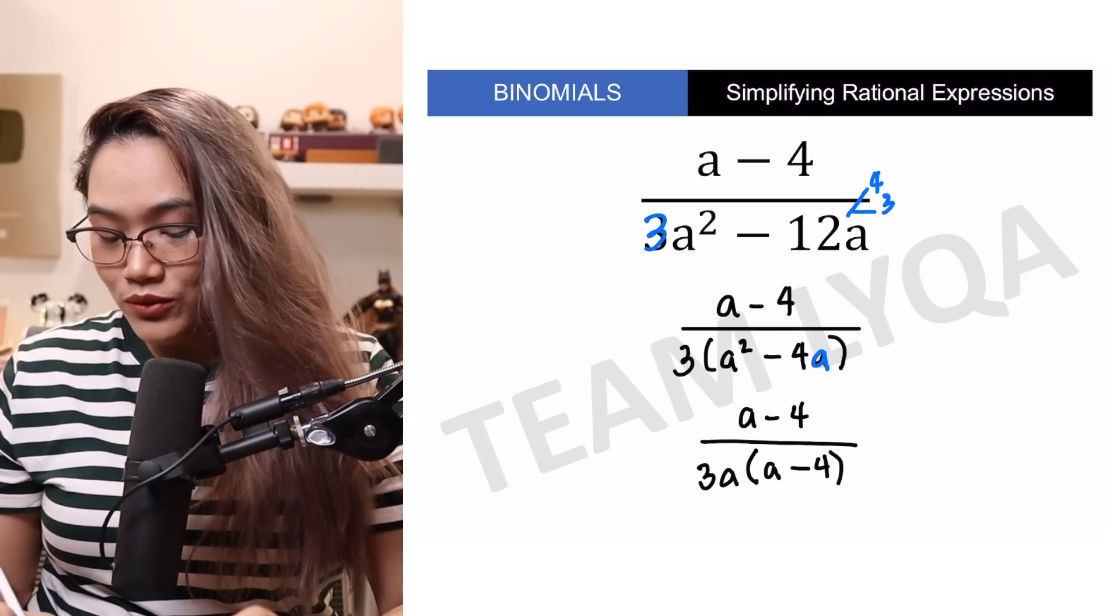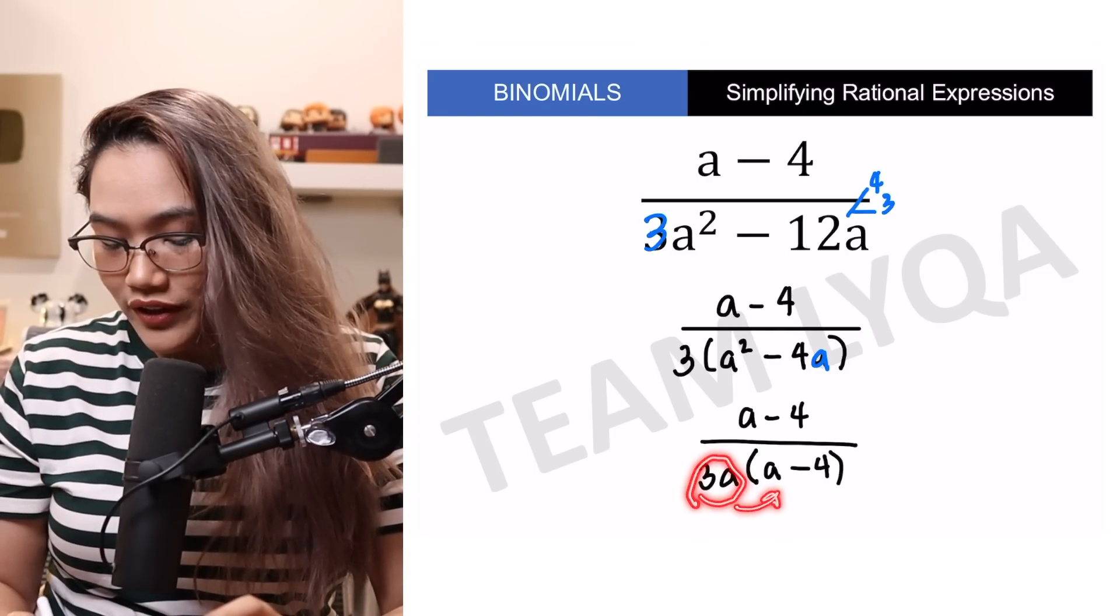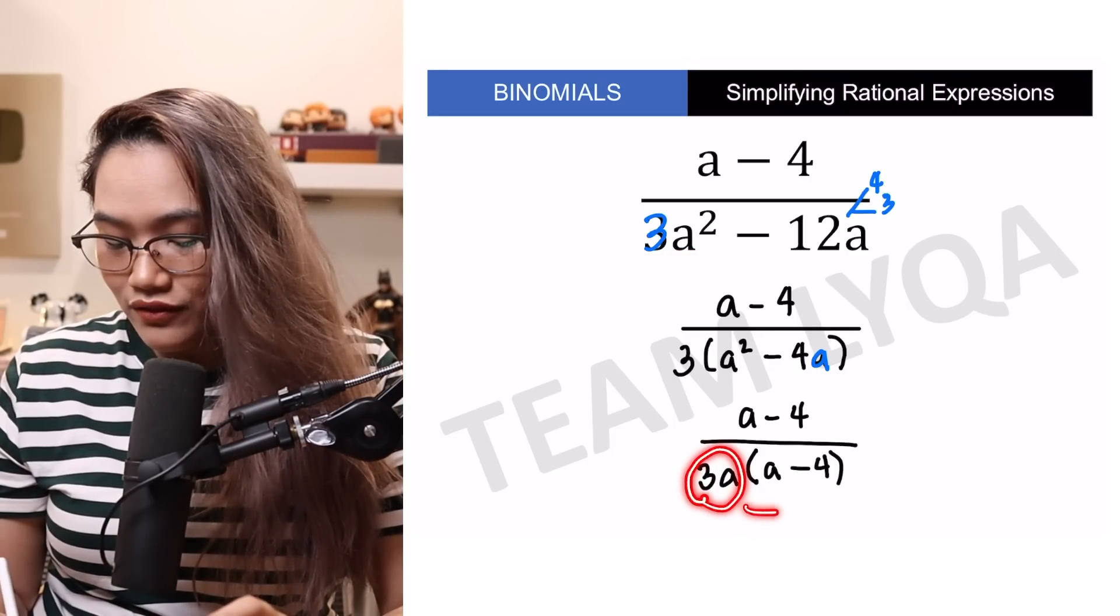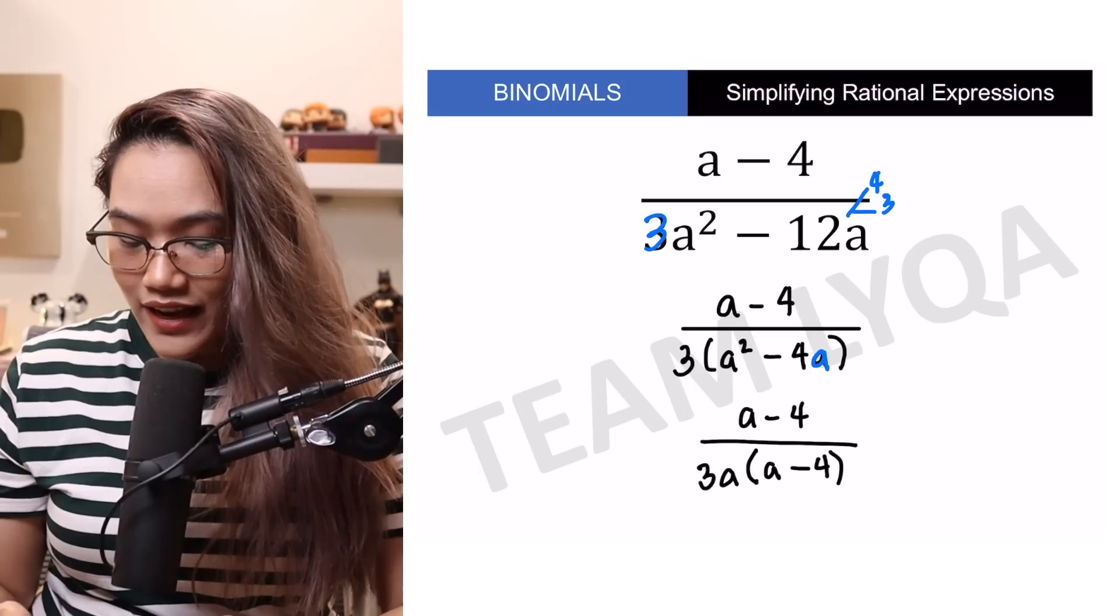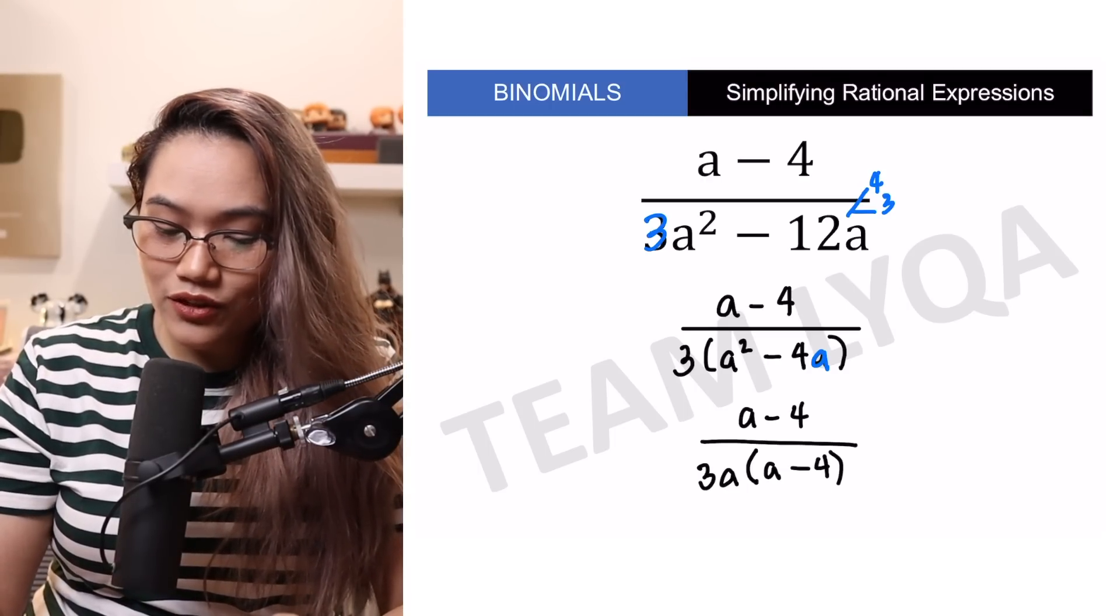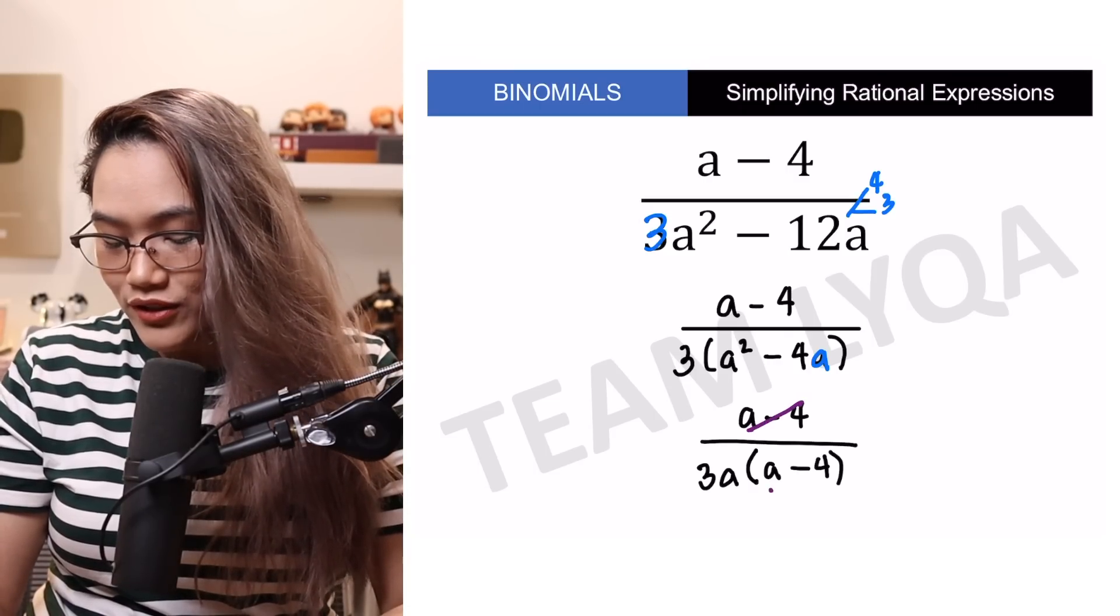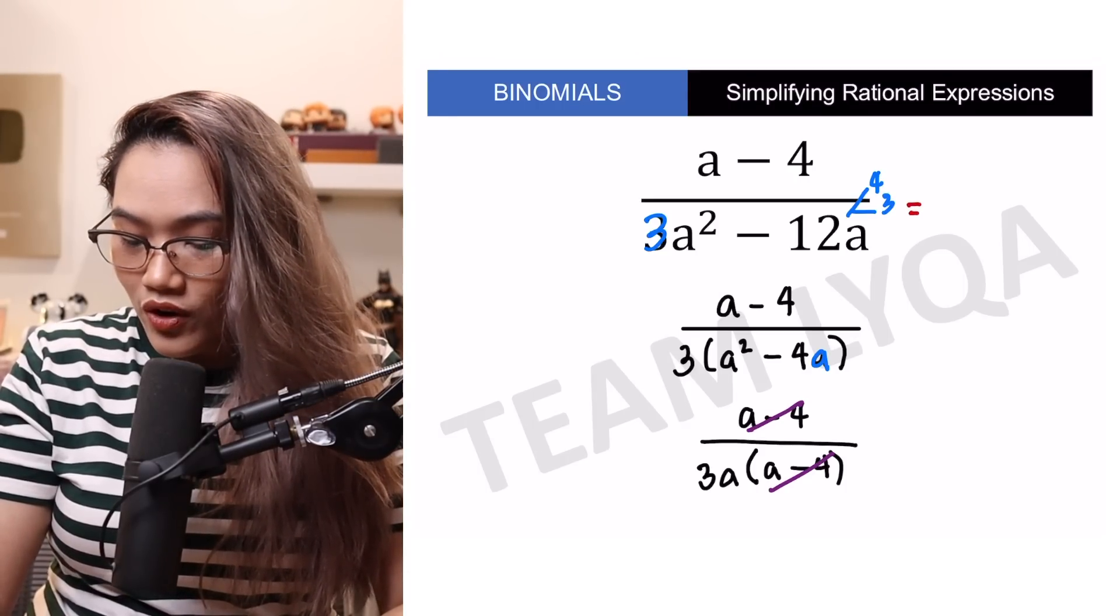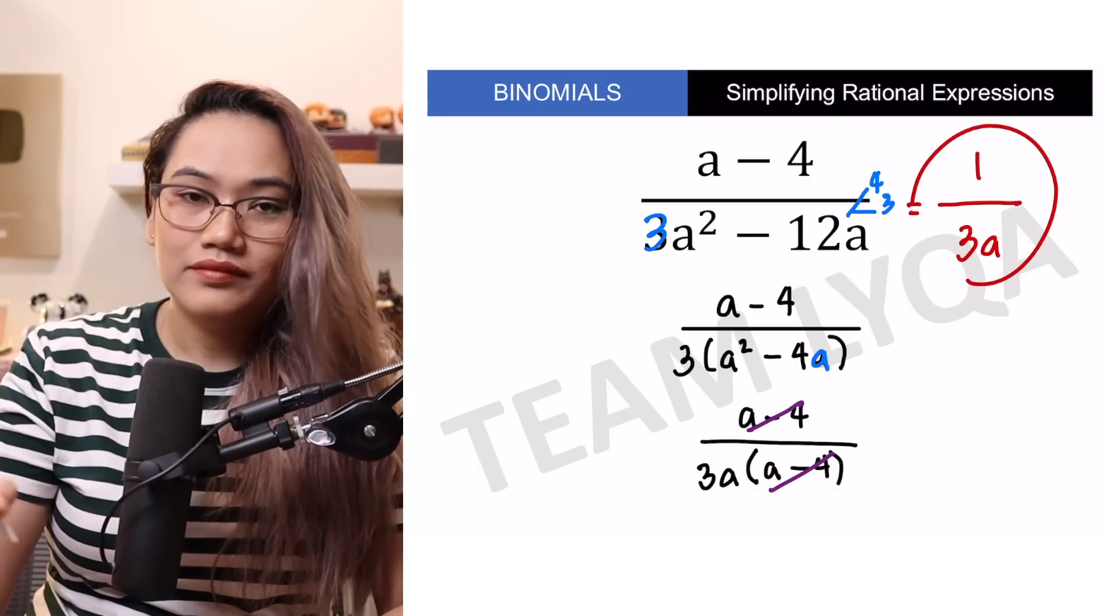Of course, kung gusto mo i-check, pwede mo i-multiply yung 3A by A. Lalabas ba yung 3A squared? Yes. Pwede mo i-multiply ko ba yung 3A sa negative 4? Lalabas yung negative 12A? Yes. And now that we have that, pwede na natin i-cancel yung pareho sa taas at sa baba. You have A minus 4 sa taas, A minus 4 sa baba. So, the answer here is actually 1 over 3A.